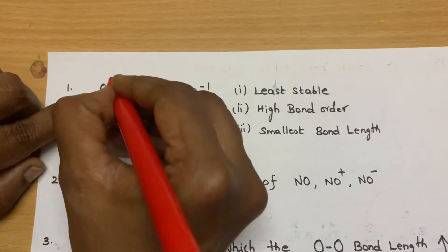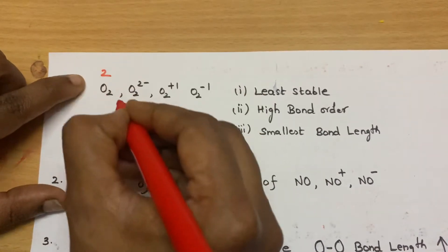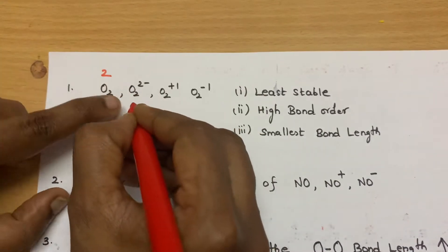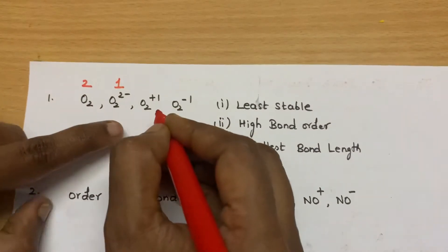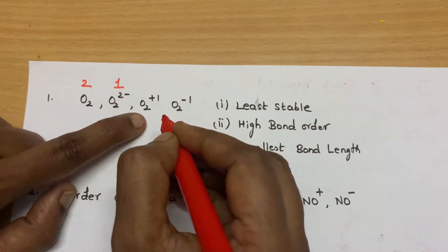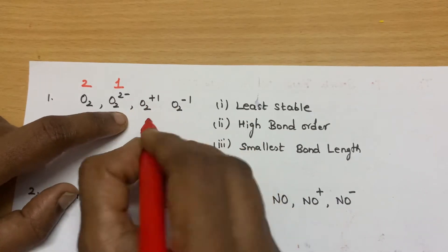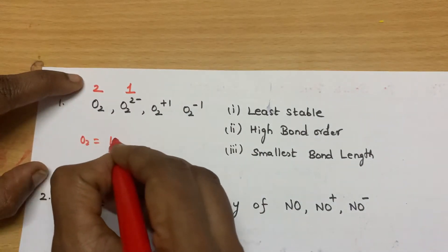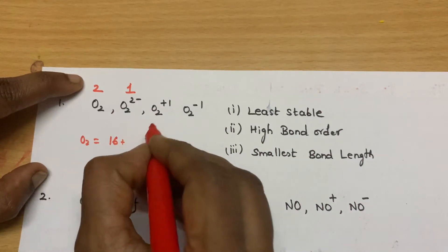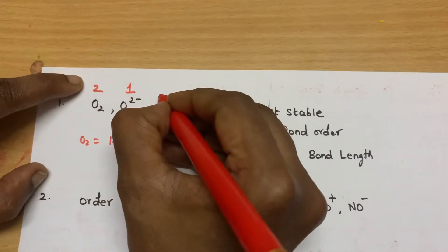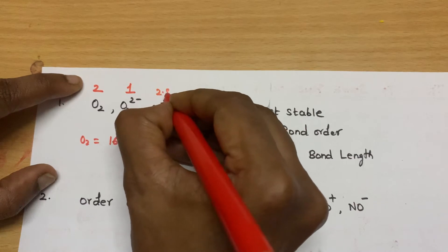So for oxygen, we know the bond order is 2. So for O₂⁻ the bond order is 1, you would have found out. And what is O₂⁺? For oxygen it is 16 electrons. O₂⁺ means you have taken away 1 electron, so it is 15. According to the rule, the bond order is 2.5.